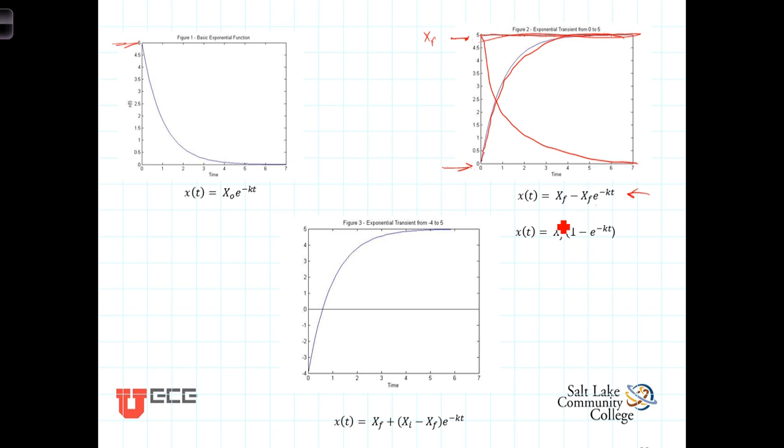Now another form of that is that we can factor out the x of f from both of those terms and we're left with x of f times 1 minus e to the minus kt.